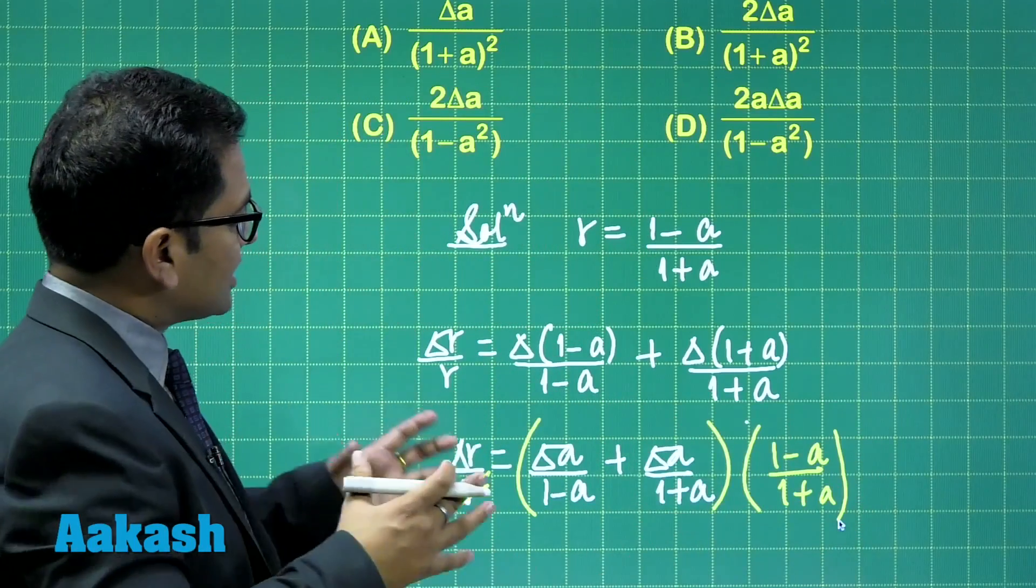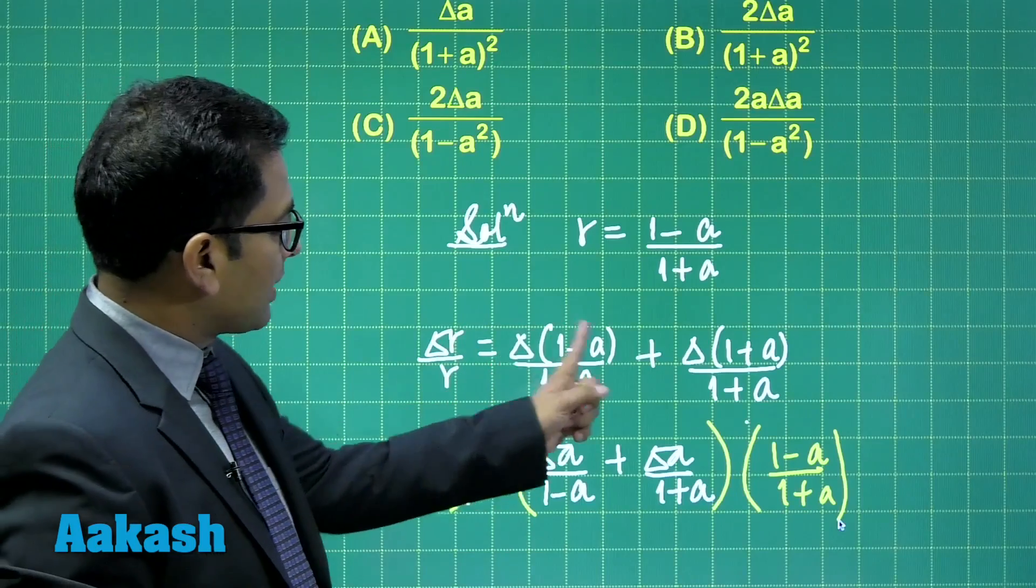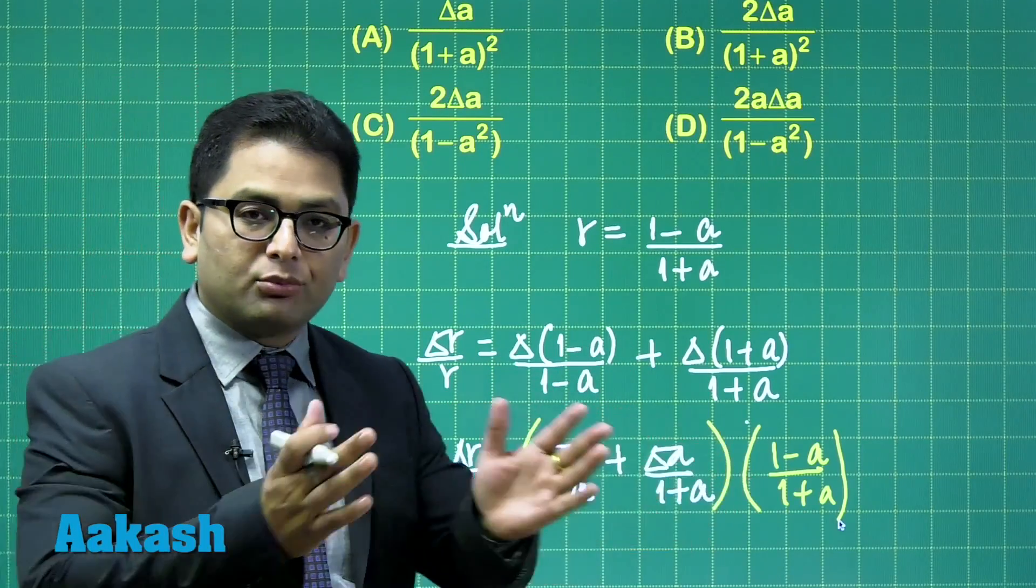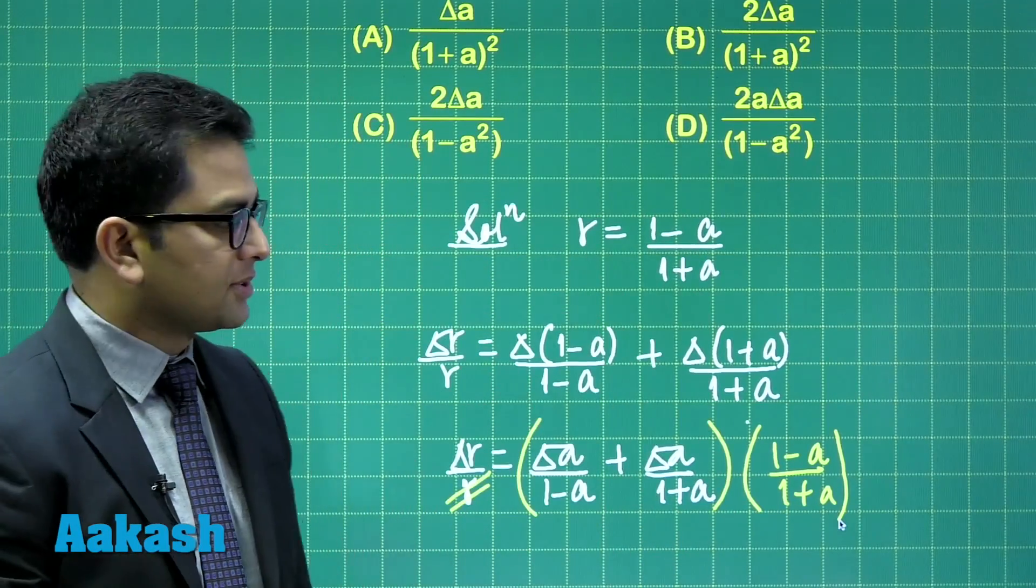Now, I think at this particular stage, I need not explain that delta(1 minus a), the minus 1, why did I write plus? Because ultimately, we are trying to fix up the range from the minimum possible till the maximum possible.